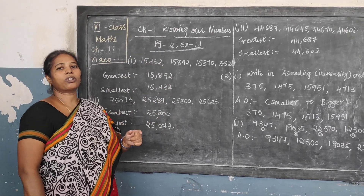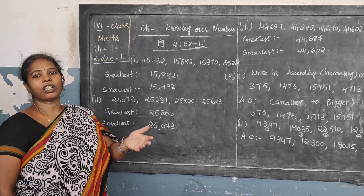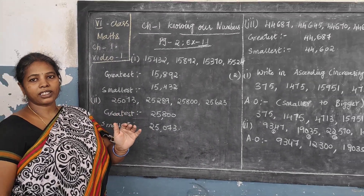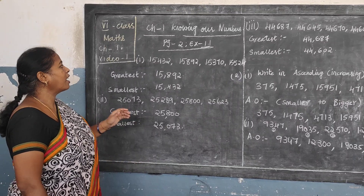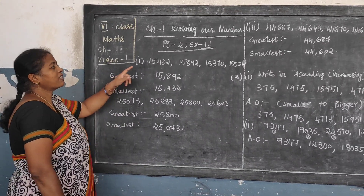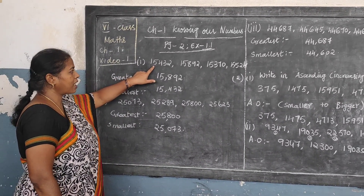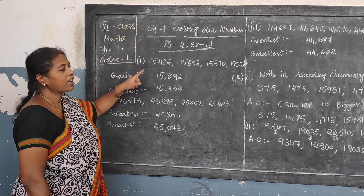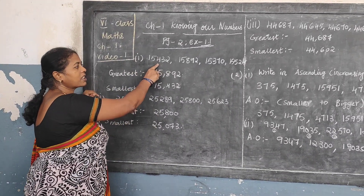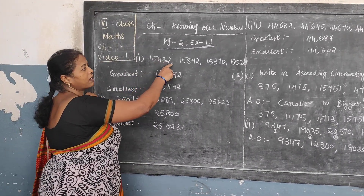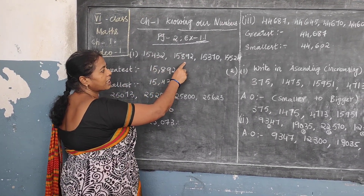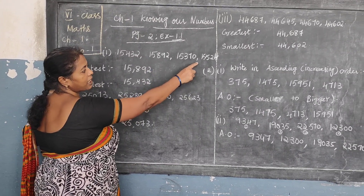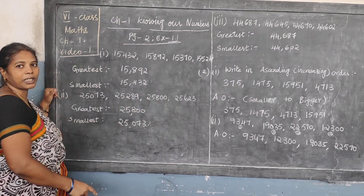Once you know how to read thousands, hundreds, and all, you will come to know which is the greatest and which is the smallest. Now the first question they gave: write the smallest and the greatest. The numbers given are 15,432 — 15,892 — 15,370 — 15,524.